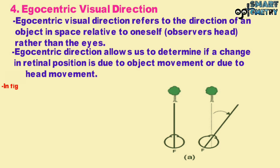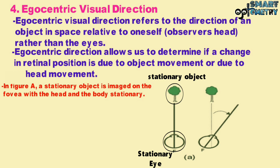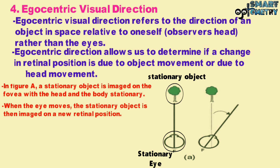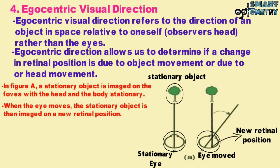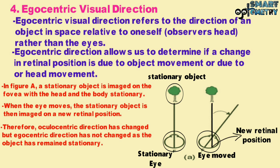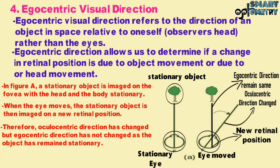In figure A, a stationary object is imaged on the fovea with the head and body stationary. When the eye moves, the stationary object is then imaged on a new retinal position. Therefore, the oculocentric direction has changed but the egocentric direction has not changed, as the object has remained stationary. The egocentric direction of the object remains the same while the oculocentric direction has changed.